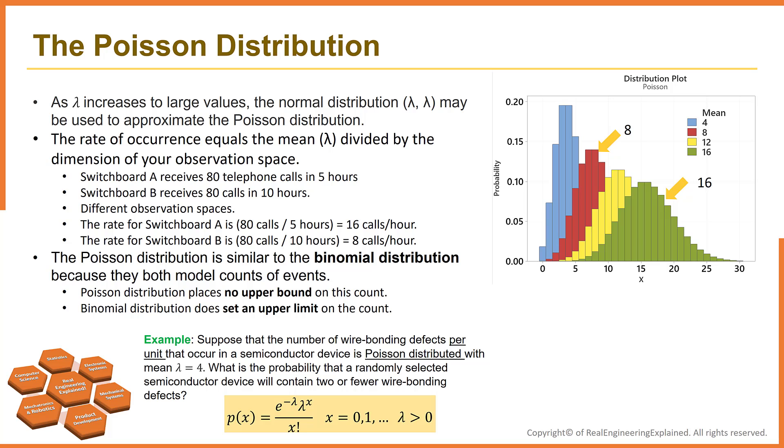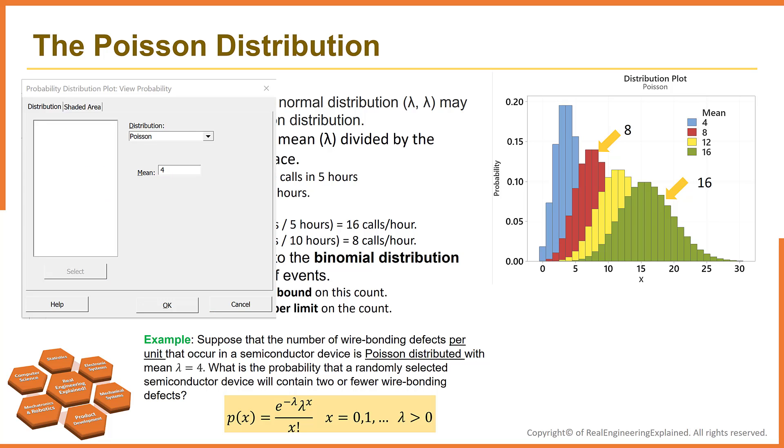Or we can easily use Minitab to calculate this. Go to graph menu and then select probability distribution function. And then select Poisson distribution. And enter 4 for lambda.